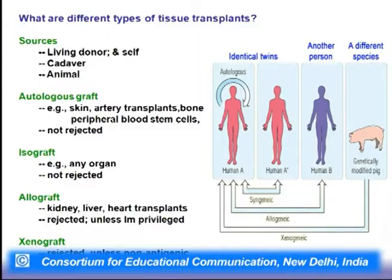Xenografts are not a very successful or comfortable option, although people are trying to transplant a pig heart into a human. Unless the patient is made non-immunogenic, there are complete chances of rejection. Currently, only the valves of the pig heart are being replaced. Everything comes back to the basics of immunology — whenever a new system is introduced into an organism, it depends on recognition and either acceptance or rejection.